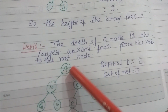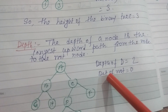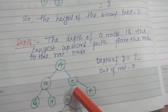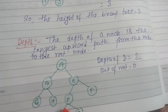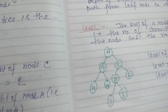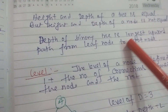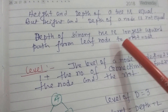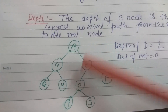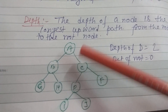The depth of the root is always 0, because the path from root to root is 0. The depth of a binary tree is the longest upward path from a leaf node to the root node. The longest such path is 3, and the height is also 3. So the height and depth of a binary tree are equal.